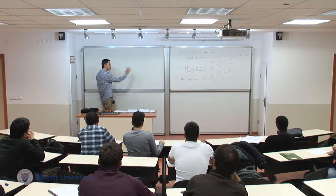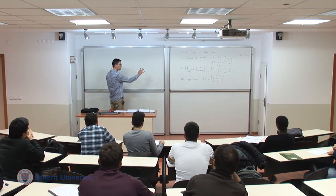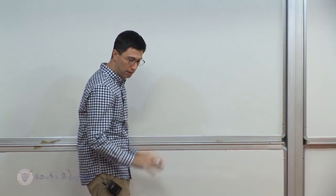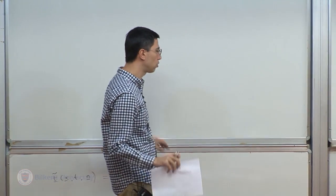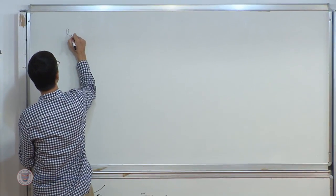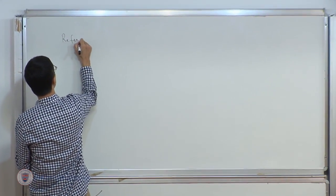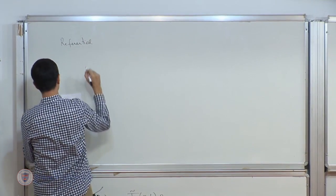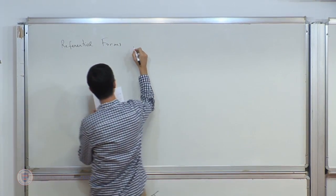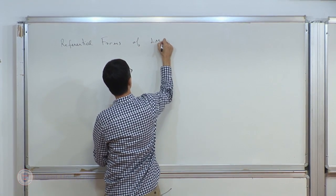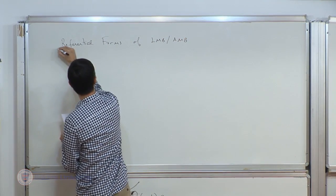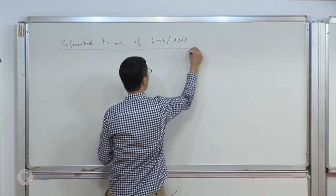We are done with balanced laws in the spatial configuration — except for the mass balance, everything was spatial. Now we will revisit linear and angular momentum balance and develop their referential forms. For this purpose, we need stress tensors that live in the reference configuration.